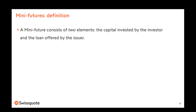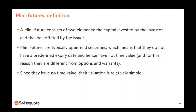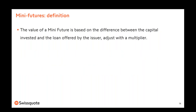A mini future consists of two elements: the capital invested by the investor and the loan offered by the issuer. Mini futures are typically open-end securities, which means they don't have an expiry date and hence have no time value. This is the reason why they are different from options and warrants. The mini future pricing is straightforward and easy to understand since there is no time decay and no volatility included in the pricing formula. The value of a mini future is based on the difference between the capital invested and the loan offered by the issuer.